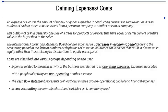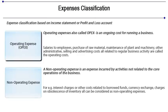Costs are classified into various groups depending on the user. Expenses related to the main activity of the business are referred to as operating expenses, while expenses associated with peripheral activity are non-operating or other expenses. The profit and loss account classifies expenses into operating and non-operating expenses. Operating expenses, also called OPEX, is an ongoing cost for running a business. Salaries to employees, purchase of raw material, maintenance of plant and machinery, and other administrative, selling, and advertising costs related to regular business activity are all called operating costs.